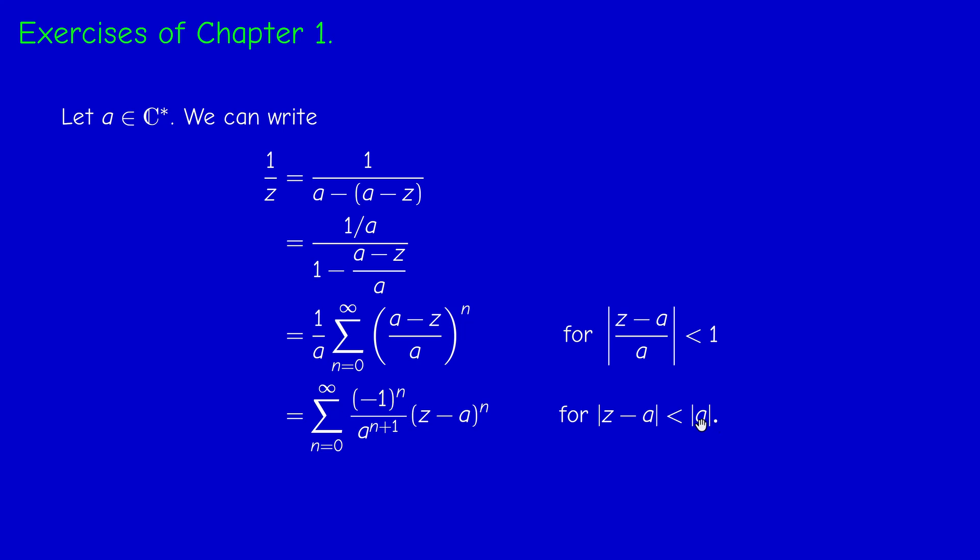And the radius of convergence is actually the modulus of a, which is not zero. And note that the radius of convergence here, modulus of a, is the distance between a and zero, which is the only singularity of 1 over z. And this is a general fact that we shall explain in the next chapter.